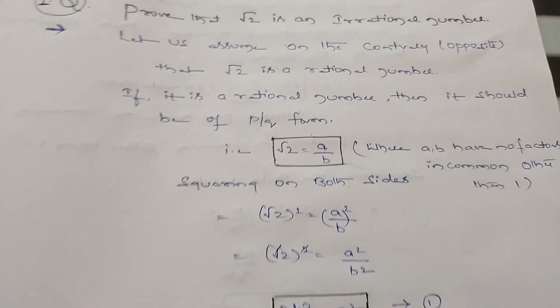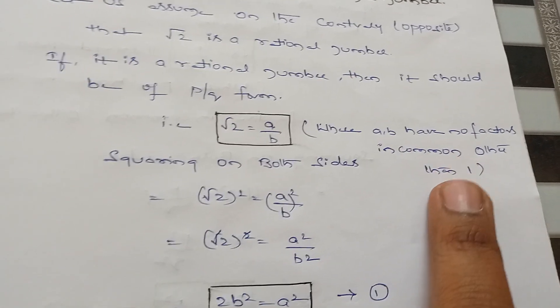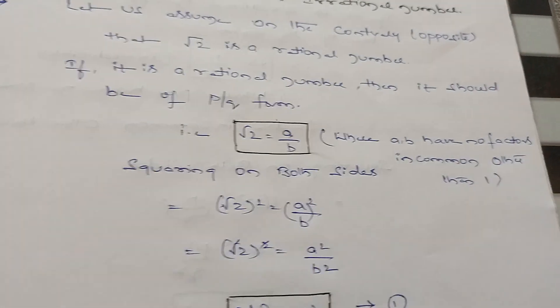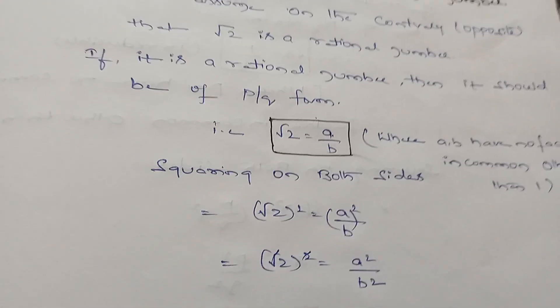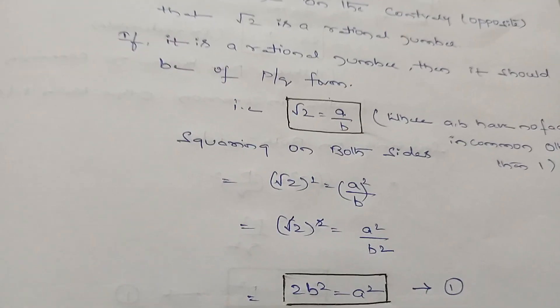I have mentioned here √2 = a/b, where a and b have no common factors except one. Therefore, a and b are co-primes, meaning they have only one as a common factor.